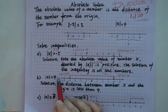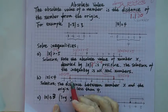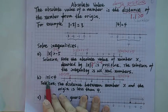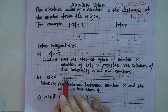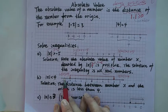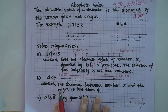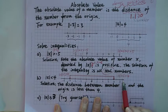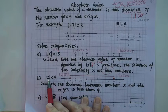We have negative 4 on the left and positive 4 on the right. If you plug in negative 5 here, the absolute value of negative 5 is 5, because the distance between negative 5 and 0 is positive 5. That's greater than 4, so any number less than negative 4 on the left is not going to work.